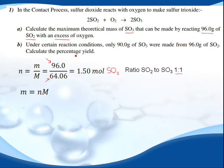We want to find the mass. We use the equation mass equals number of moles times molar mass. We input the numbers: 1.50 multiplied by the molar mass of SO3, which is 80.06, gives us 120.09 grams.